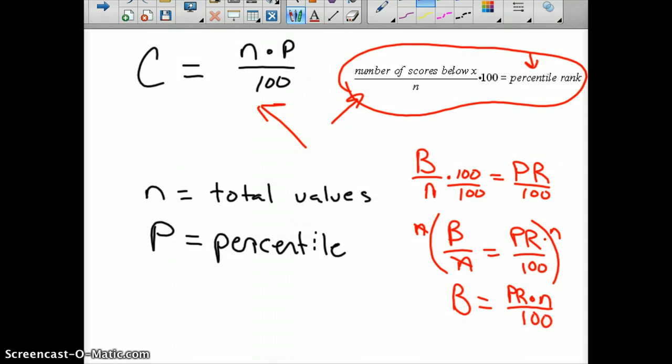And so the N's cross out on this side, and you'd have N times PR on this side. So B is equal to PR, percentile rank, times N divided by 100. Their P is our PR, so percentile rank. N is the number of scores. 100 is good. C is the number of scores below X.